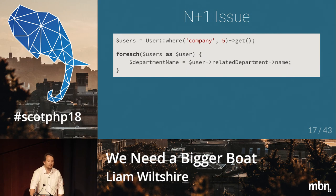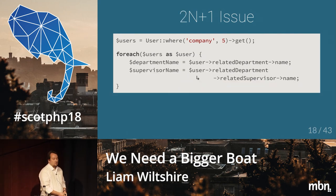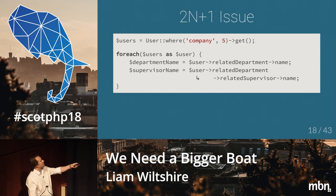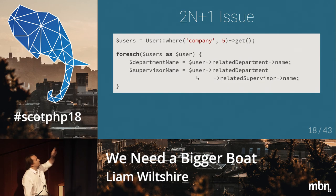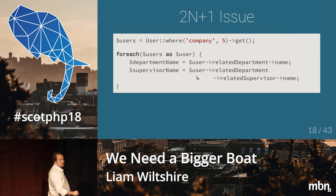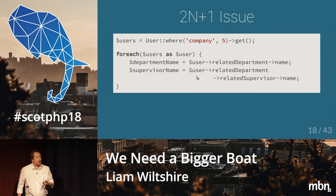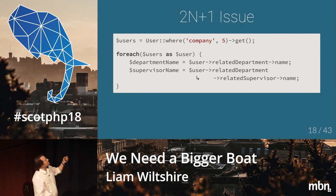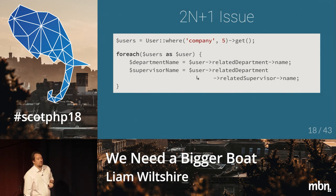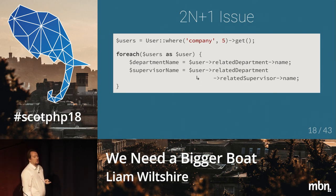That's insane. Now imagine you're doing that twice. Or imagine you've got a related department that has a supervisor — so now you load each user, load their department (another query), and for that department load the supervisor (another query). Now for each user you're doing two queries. If you've got 5,000 users, you've now run 10,001 queries and you've probably killed your system.